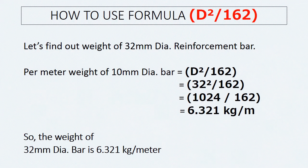Let's find out the weight of a 32 mm diameter reinforcement bar. Per meter weight of 32 mm diameter bar equals D²/162. By putting the value of the diameter in the formula and solving, we get the answer 6.321 kg per meter. So the weight of a 32 mm diameter bar is 6.321 kg per meter.